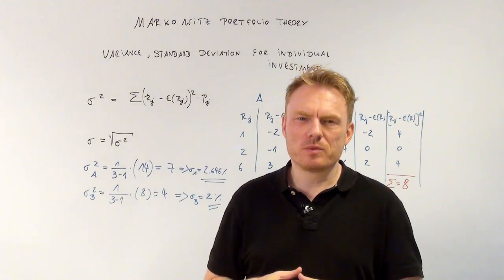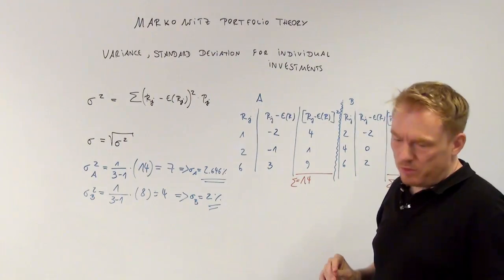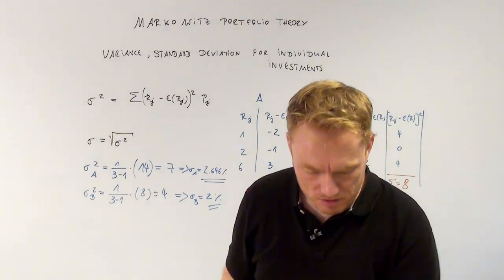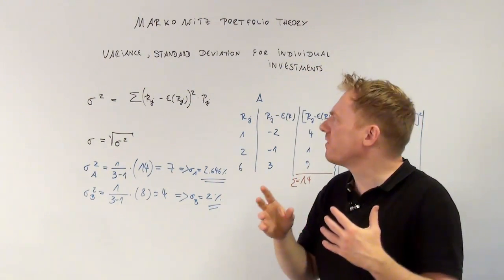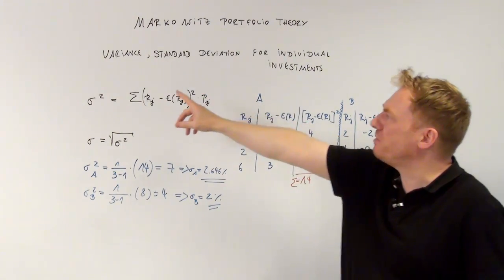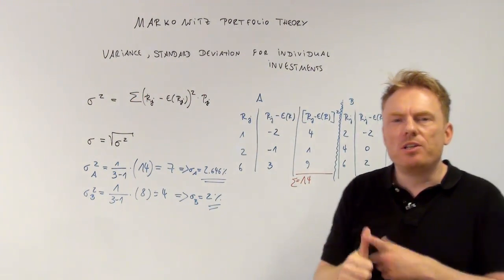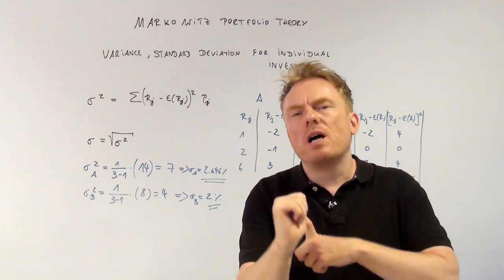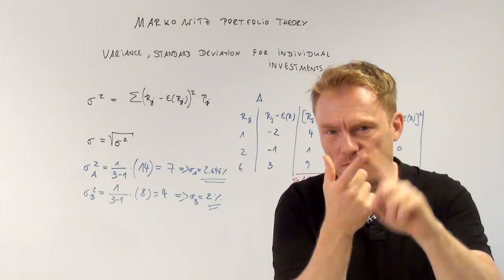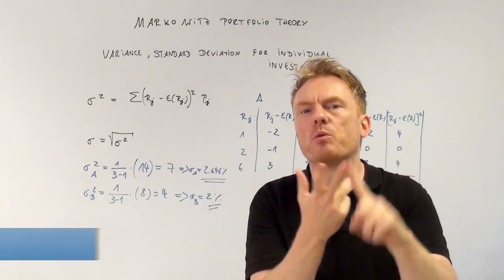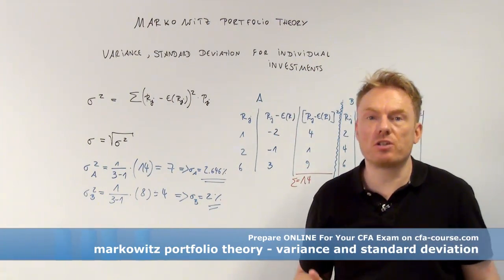Welcome to our next video. We're talking about Markowitz portfolio theory, and as part of Markowitz portfolio theory we need to discuss how to compute variance and standard deviation. You need to know how to calculate expected return, variance and standard deviation, and of course covariance and the correlation coefficient.